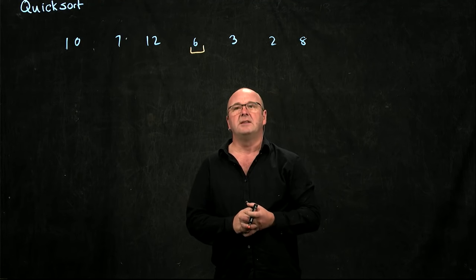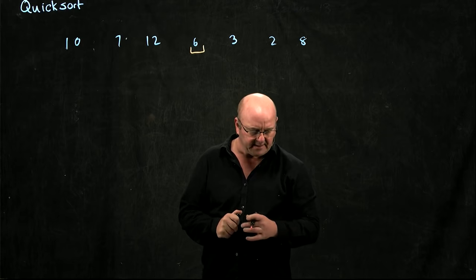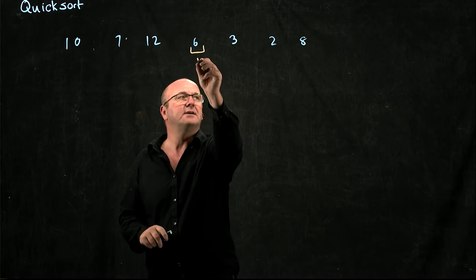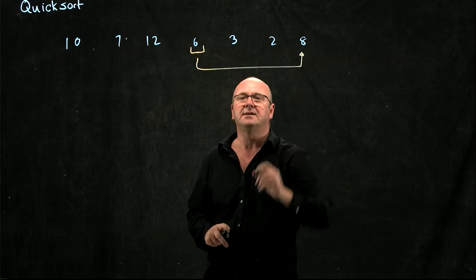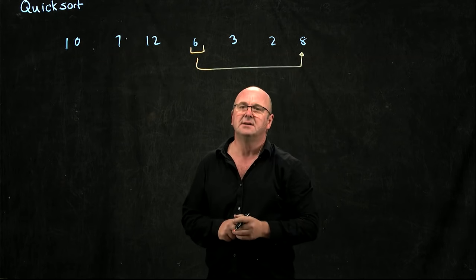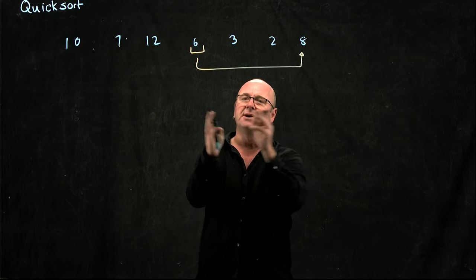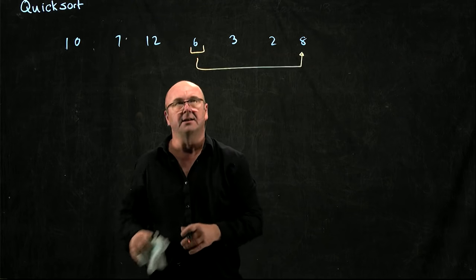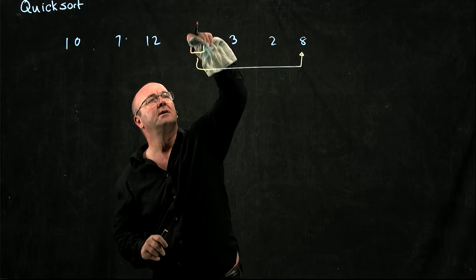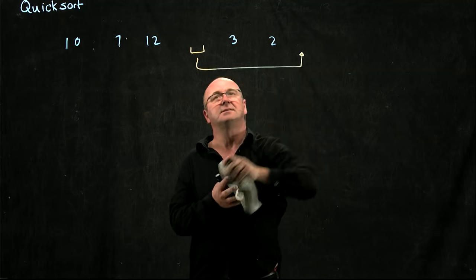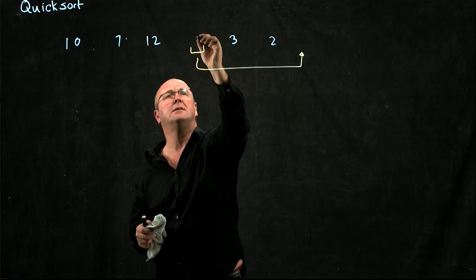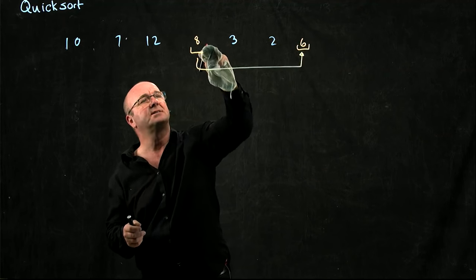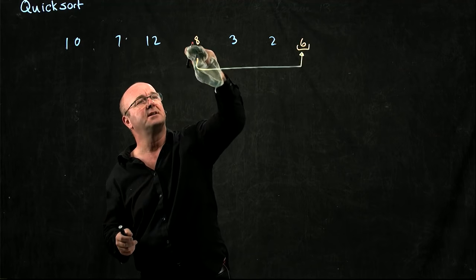The way that we do that is we take the number in the middle of the list and move it to the end of the list. We do that by just swapping the last element and the middle element. So we swap the 6 and the 8, and now the 6 is our pivot point and is the last element in the list.